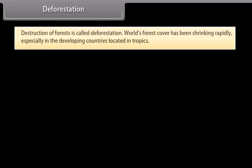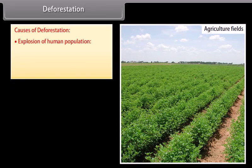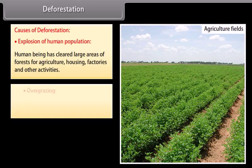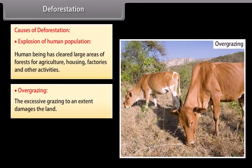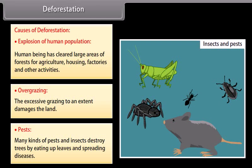Deforestation: destruction of forests is called deforestation. The world's forest cover has been shrinking rapidly, especially in developing countries located in the tropics. Causes of deforestation include: explosion of human population — humans have cleared large areas of forests for agriculture, housing, factories, and other activities; overgrazing, which extensively damages land; and pests — many kinds of pests and insects destroy trees by eating leaves and spreading diseases.